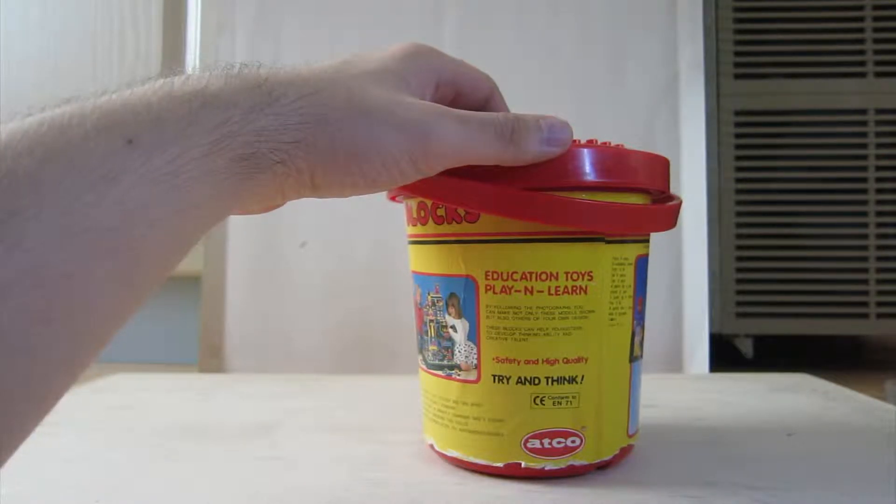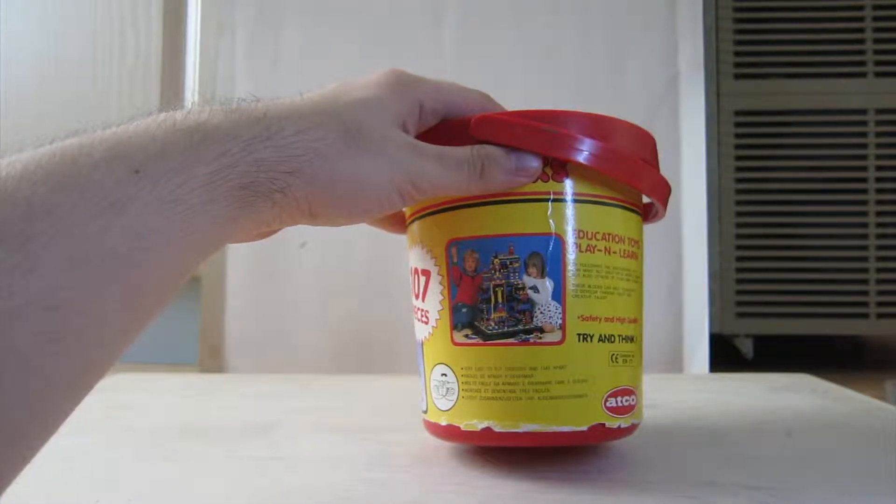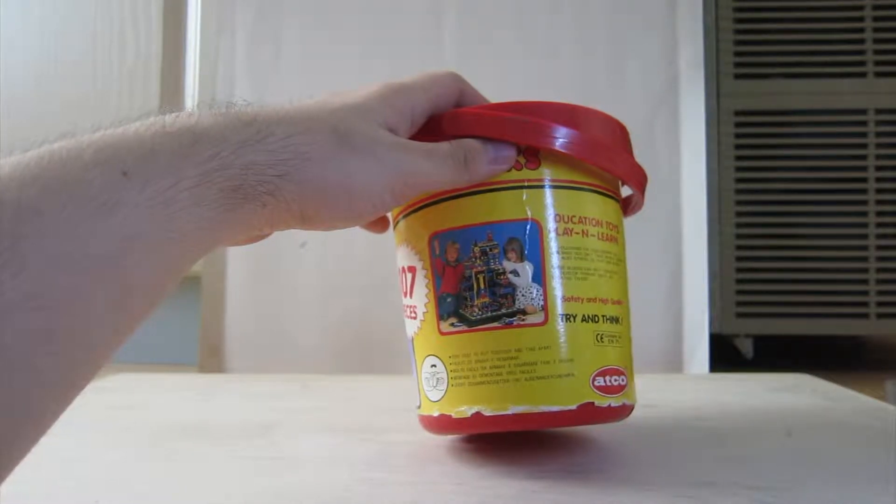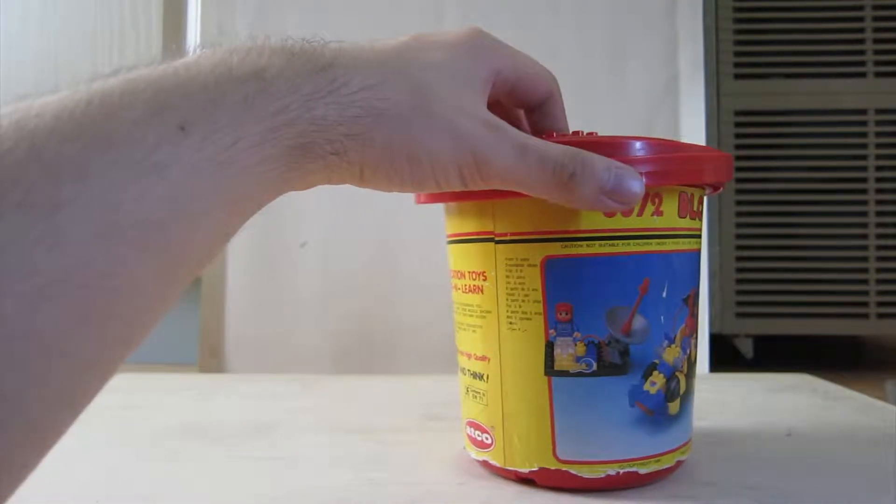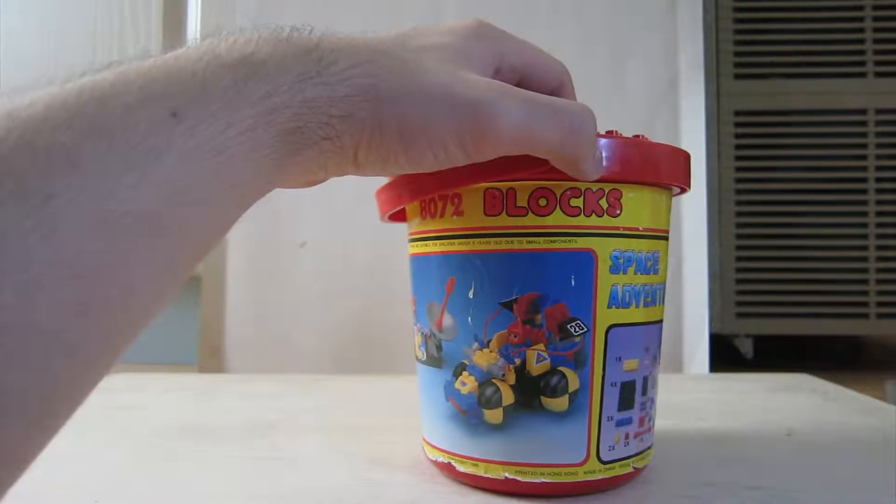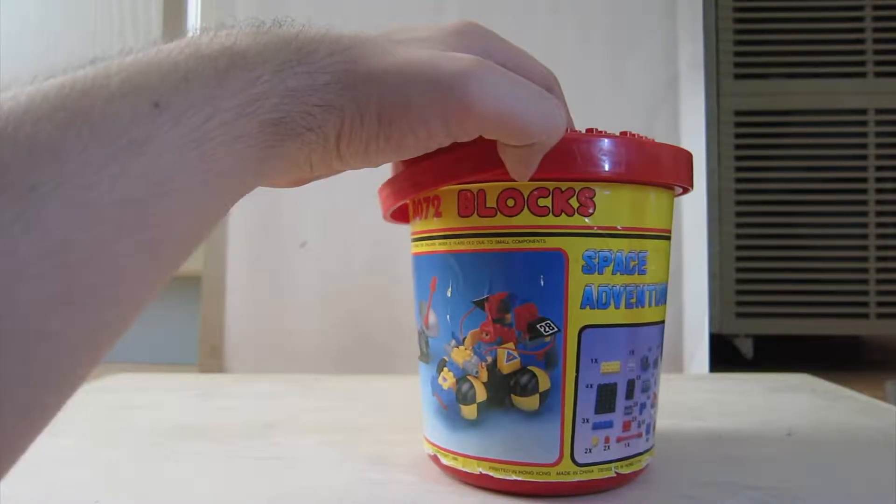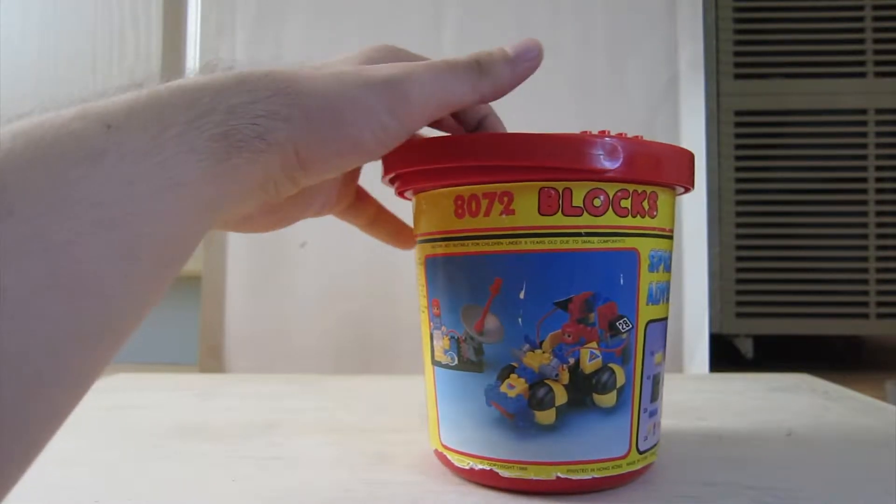Should that be thinking abilities? I don't know, never mind. Very easy to put together and take apart. From five years, caution not suitable for children under five years old due to small components. So this is set 8072.